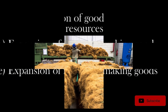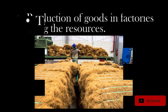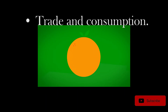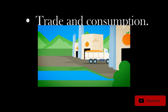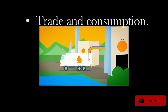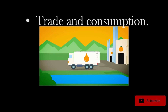The Expansion of Making Goods: People started to produce or make their goods further. This developed into production of goods in factories using raw materials available. Trade and consumption started with this.